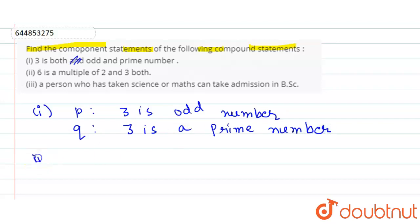Now the second part of the question is: 6 is a multiple of 2 and 3 both. So the first component statement is 6 is a multiple of 2, and the second component statement is 6 is a multiple of 3.